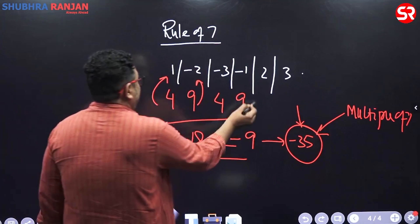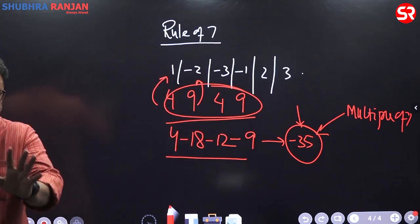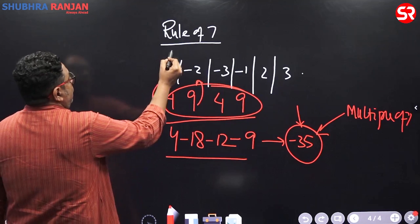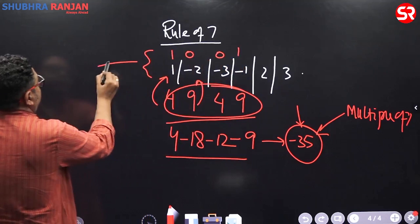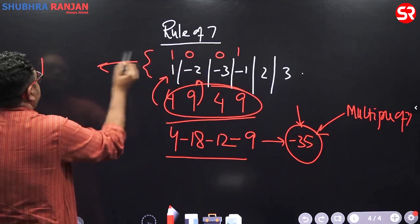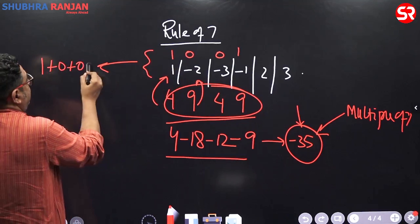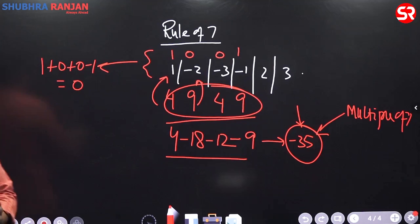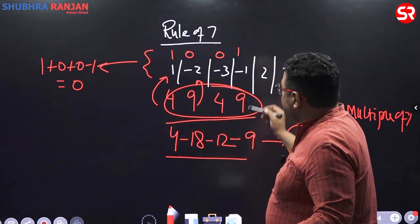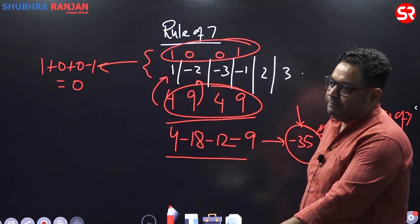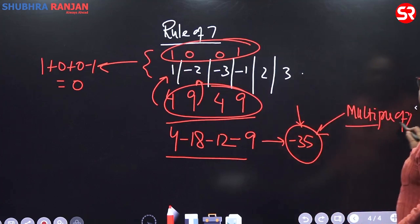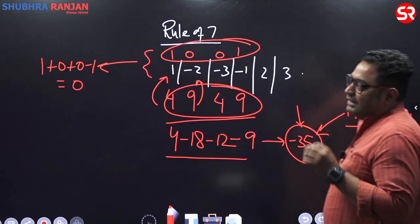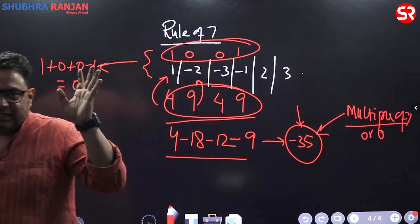Is 1001 exactly divisible by 7? Using the series: 1×1=1, 0×(−2)=0, 0×(−3)=0, 1×(−1)=−1. Sum = 0. Since 0 is a multiple of every number, 1001 is exactly divisible by 7. So whenever you get a multiple of 7 or 0, the number is exactly divisible by 7.